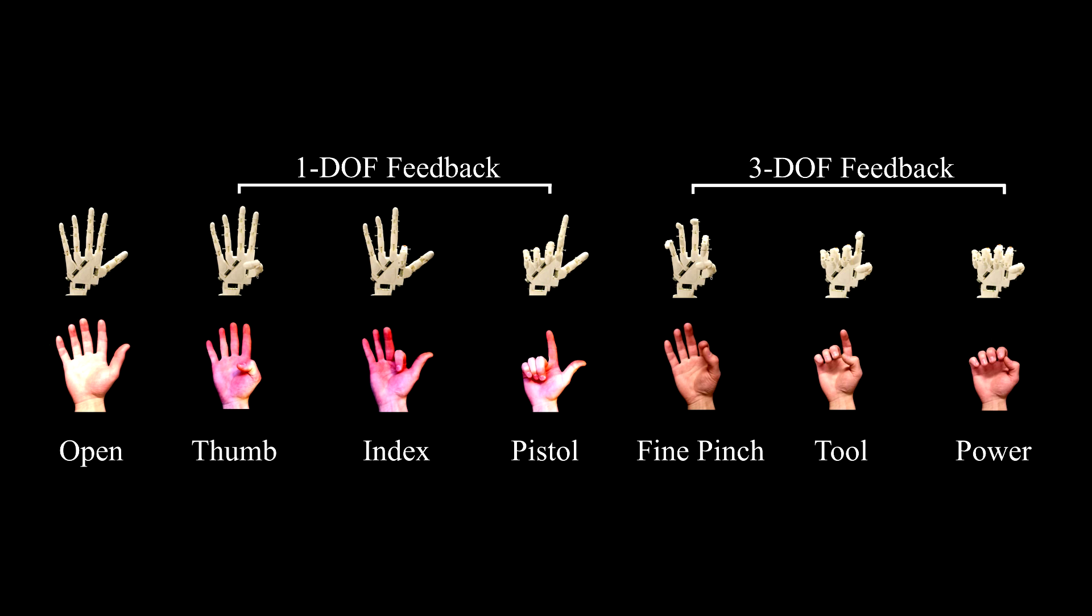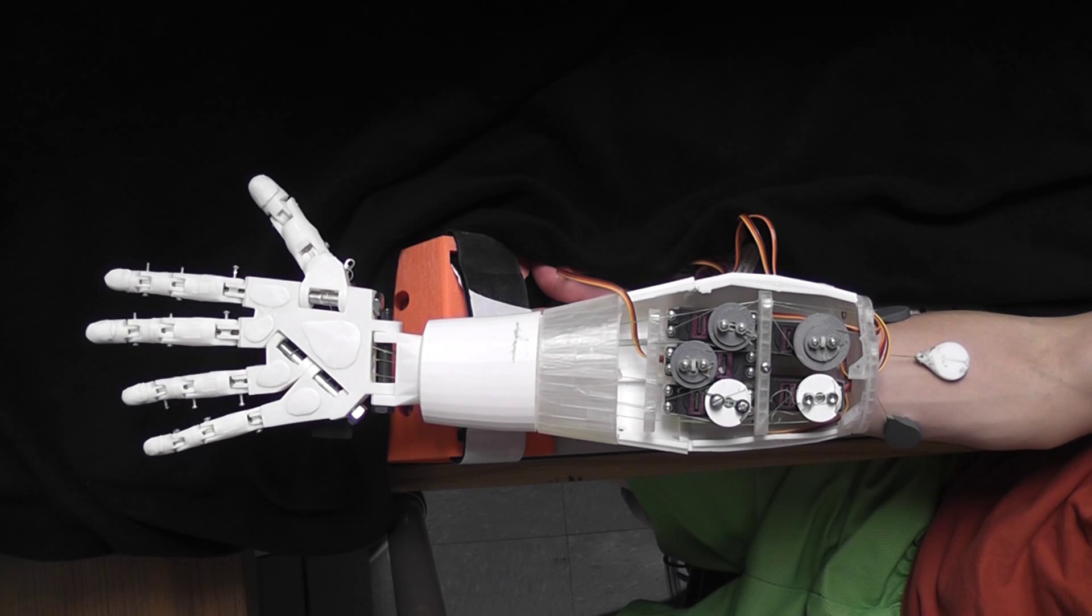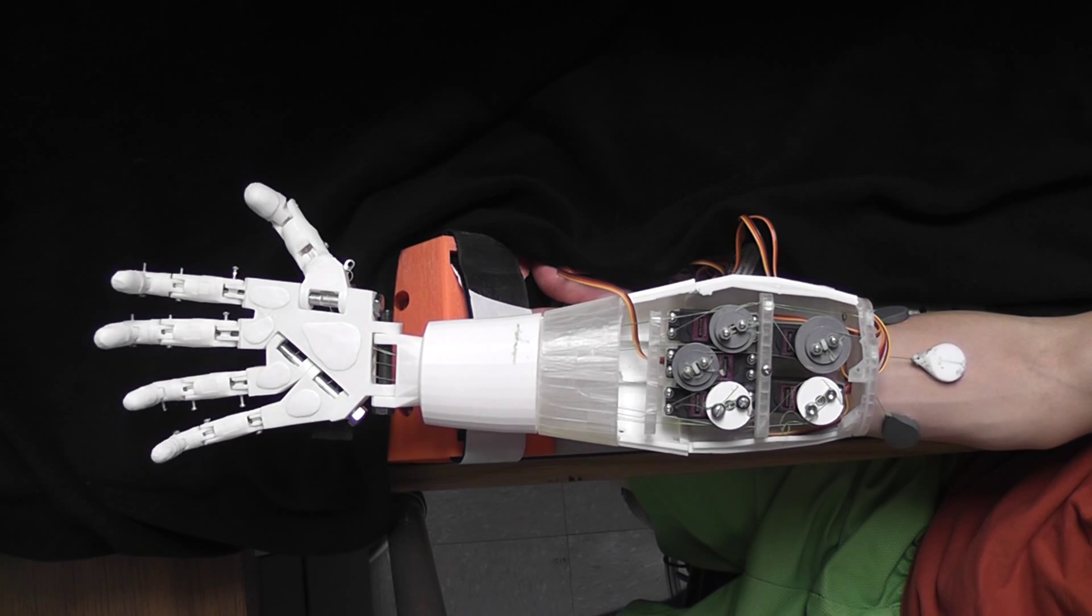Subjects were asked to distinguish between six grips, all beginning from an open hand configuration. Here, you can see how multiple contact pads are displaced for particular grips.